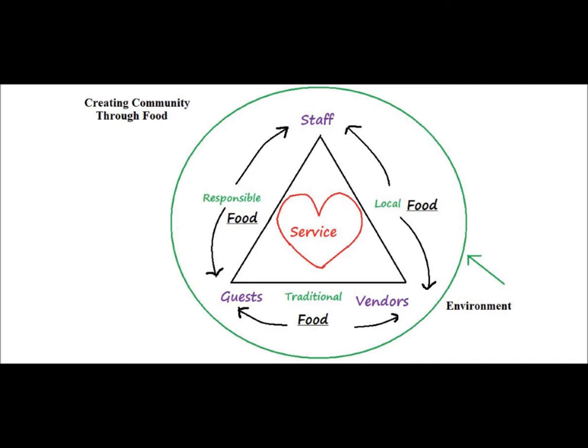Now, the one thing that connects all three groups in this triangle is food. The three types of food important to a community are local food, traditional food, and responsible food, which is food that is organic, fair trade, and free of slave labor.